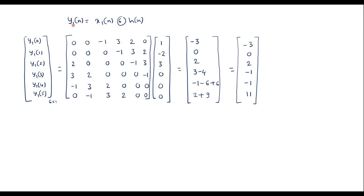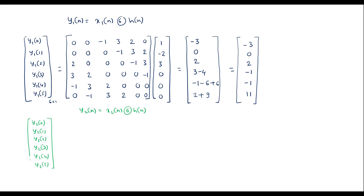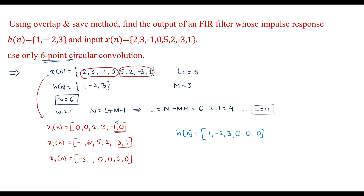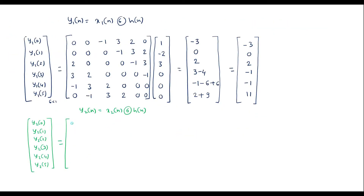Now we perform circular convolution between x2 of n and h of n. We set up the y2 matrix with output values y2(0) through y2(5). Writing x2 of n — minus 1, 0, 5, 2, minus 3, 1 — vertically as the first column. The first row is the same sequence in reverse order: 1, minus 3, 2, 5, 0, minus 1.